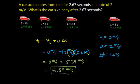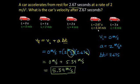That's the velocity after a total time of 2.67 seconds. Looking at our picture, the car would be somewhere between its 2-second and 3-second positions. Since 2.67 seconds is between 2 and 3 seconds, the velocity of 5.34 meters per second is a little greater than 4 m/s and a little less than 6 m/s — exactly what we'd expect.